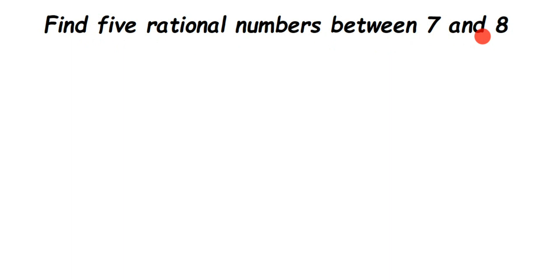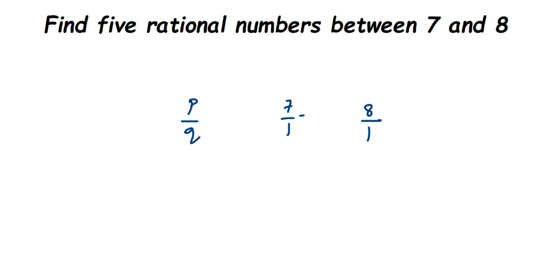Remember, there are infinitely many rational numbers between any two rational numbers. Now, 7 and 8 are rational numbers. You have learned that integers, whole numbers, and natural numbers can be written in rational number form — that is, in the form p by q. So 7 can be written as 7 by 1 and 8 as 8 by 1, which are the same values.